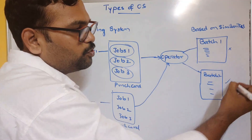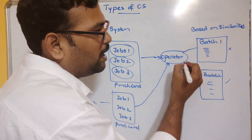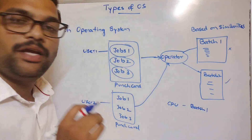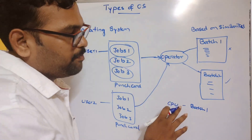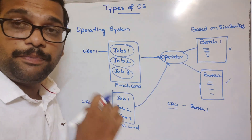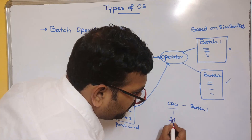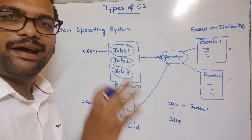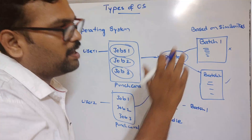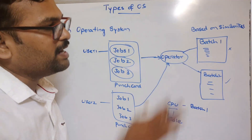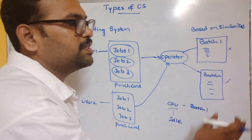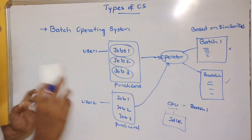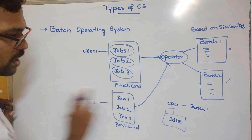The drawback is that until batch one completes, batch two has to wait. The main issue is CPU utilization — the CPU may be in an idle state if any process requires I/O operations. The CPU has to wait until the I/O operation completes before it can execute the next process. There is a chance of CPU idleness in this batch operating system.